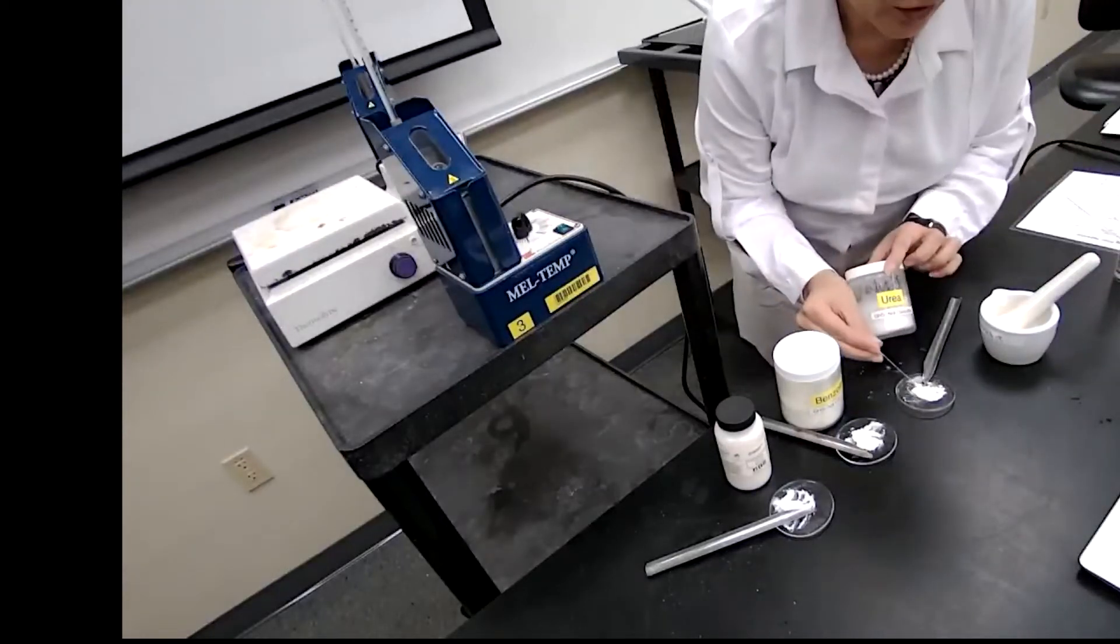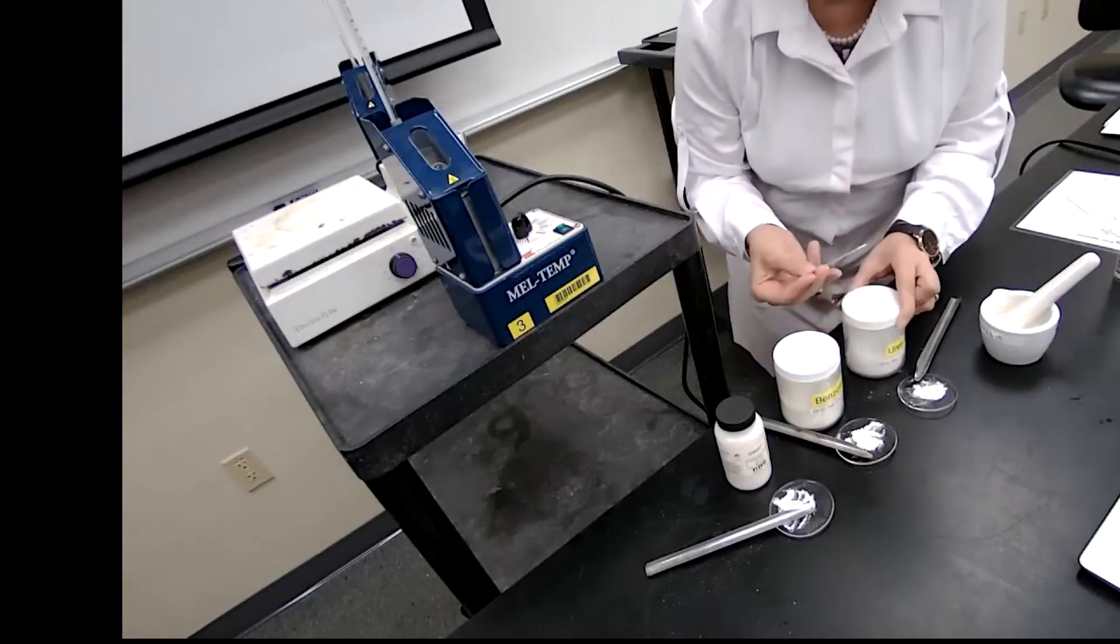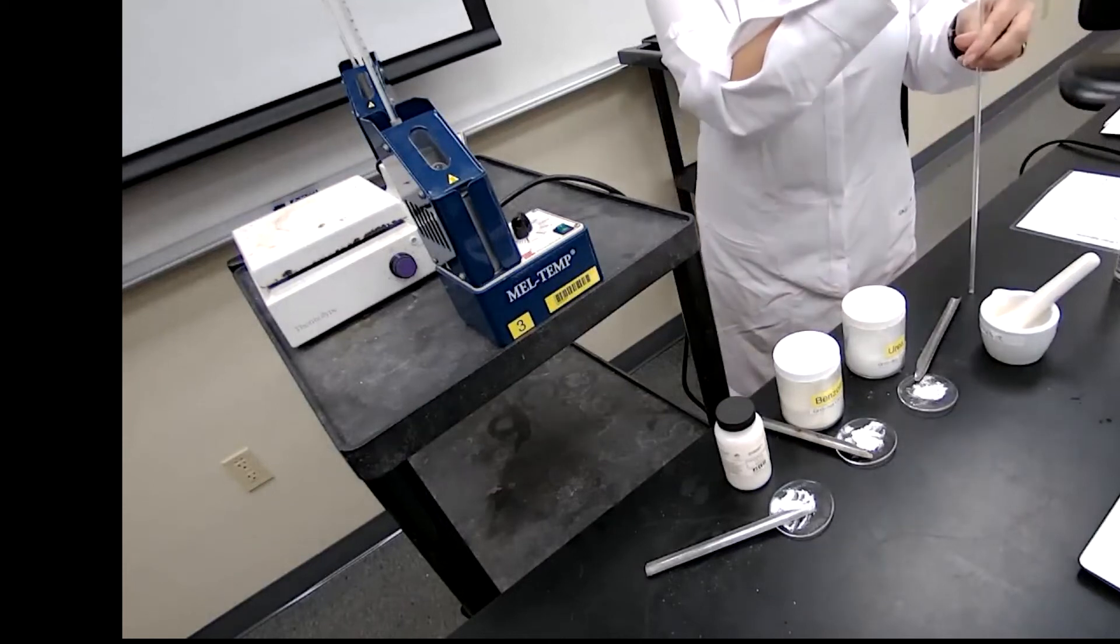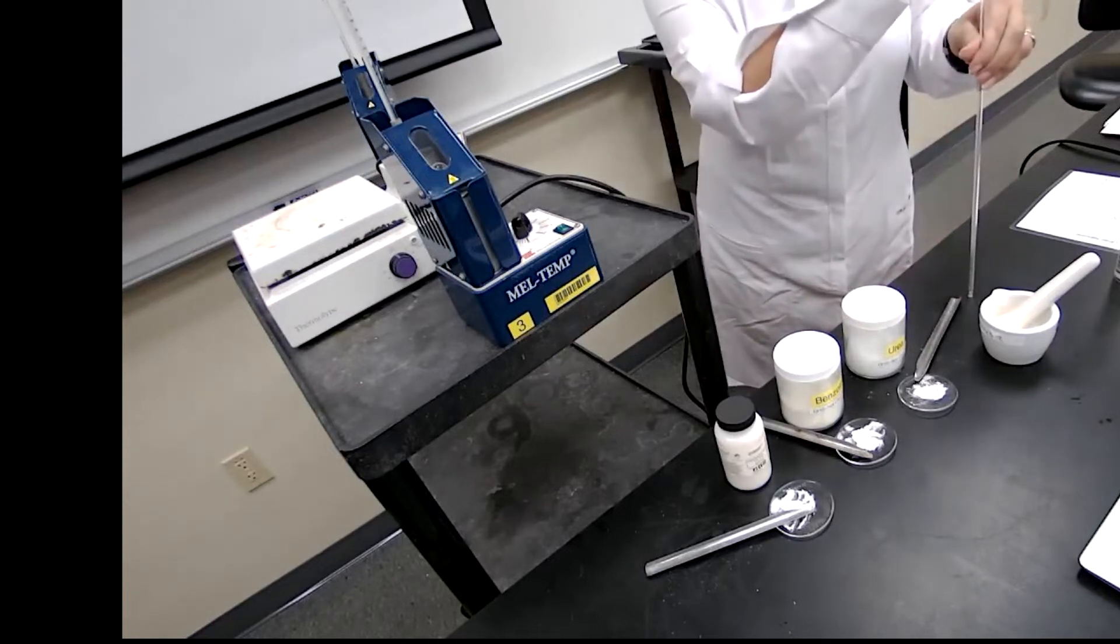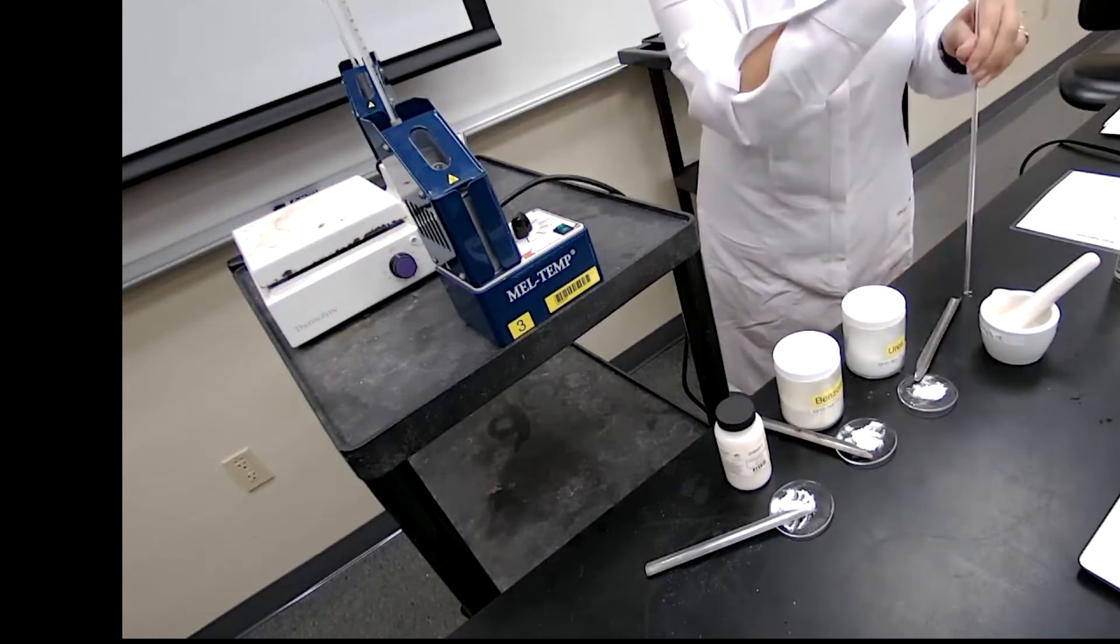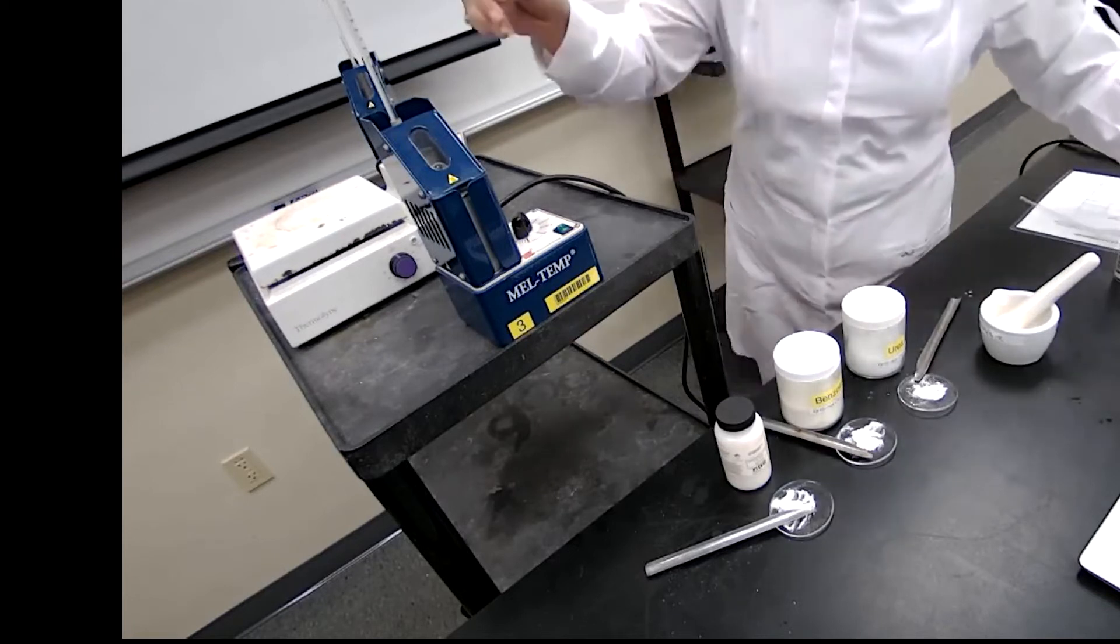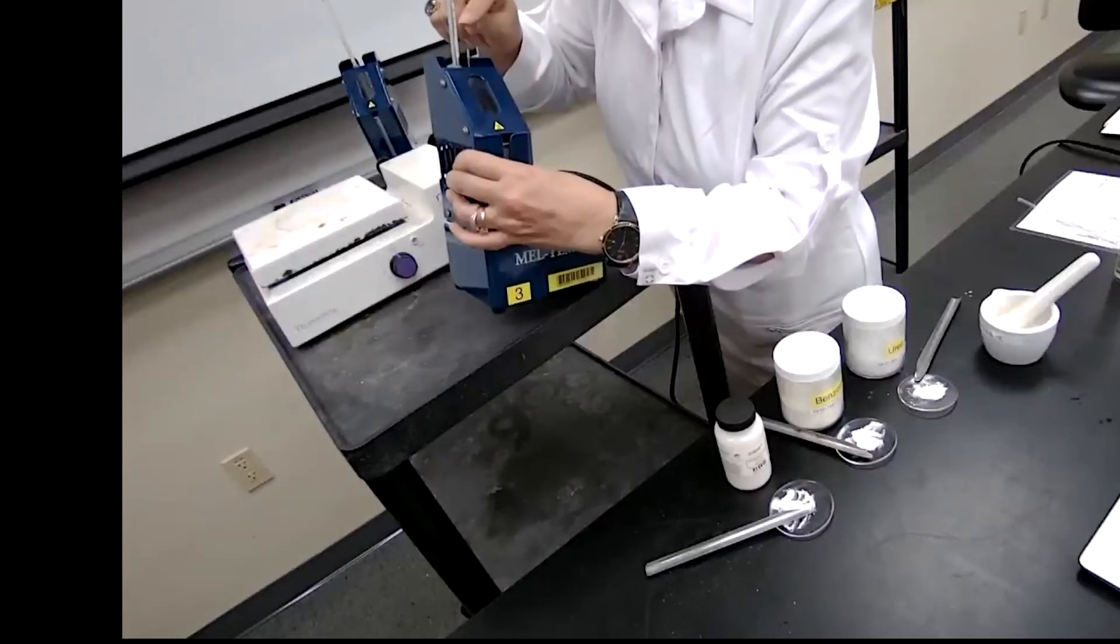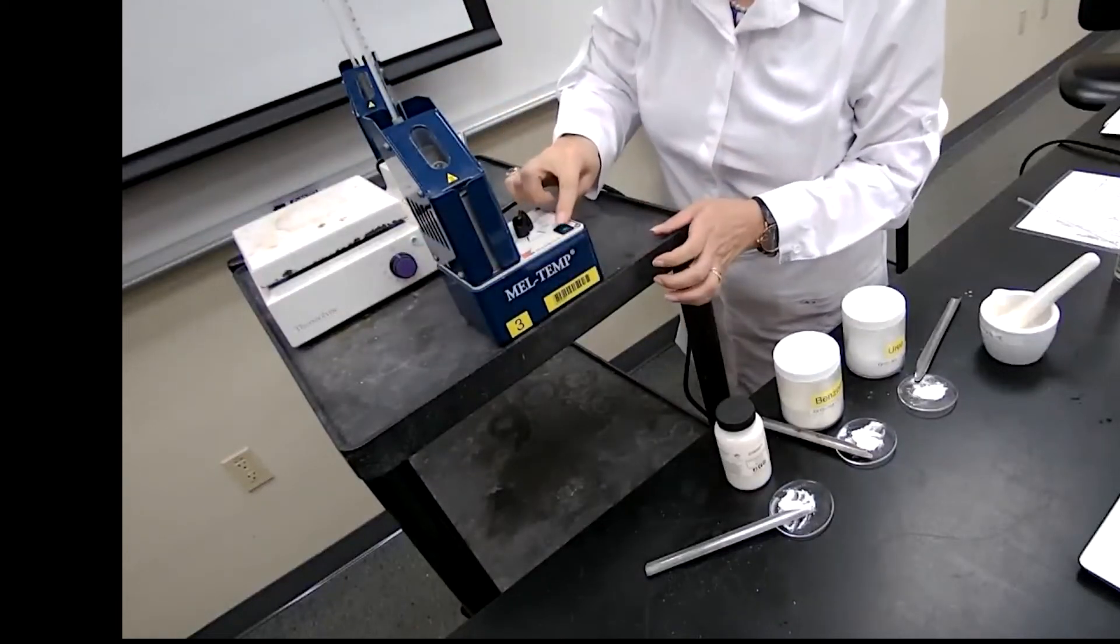The first sample that I'm trying is the mixture of the unknown two with urea. I will make the sample same way as other melting process that we did follow. I would place that in the sample holder and turn on the machine.